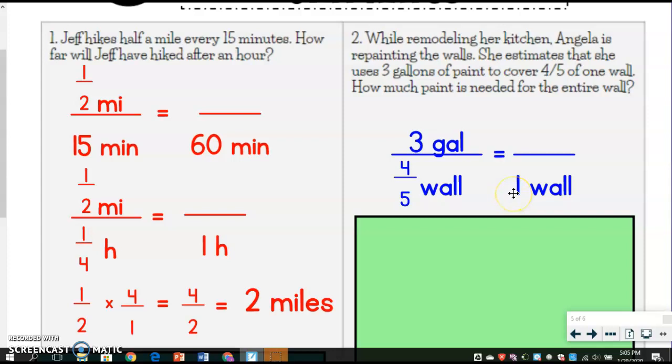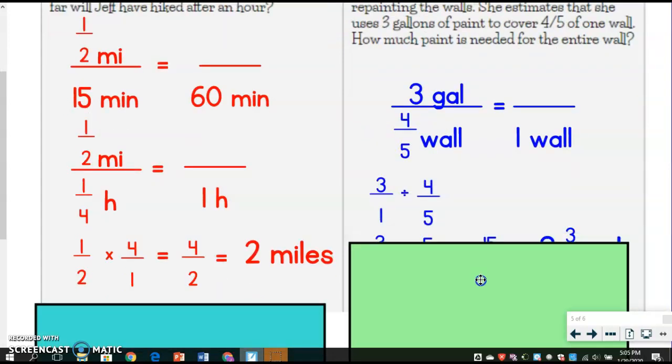And we're figuring out for an entire wall. Well, this one's a lot harder for us to figure out to go from four-fifths to one. So again, I'm going to focus more on this side and think of this as a division problem. So I'm thinking of this as three divided by four-fifths. That's really what that means. That's really what you've been doing on the other problems. We've just looked at it in a different way. But that's, excuse me, that is what this means.